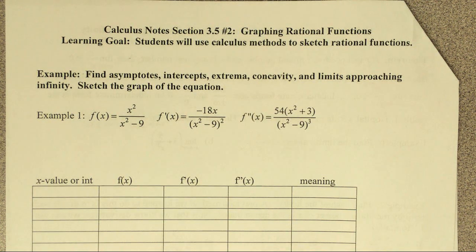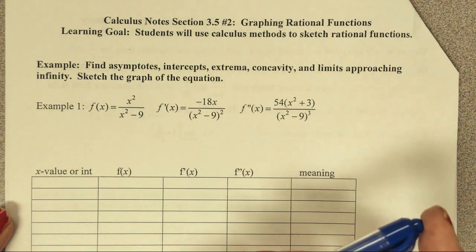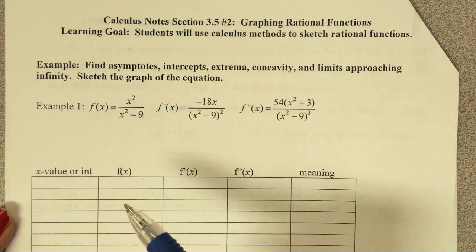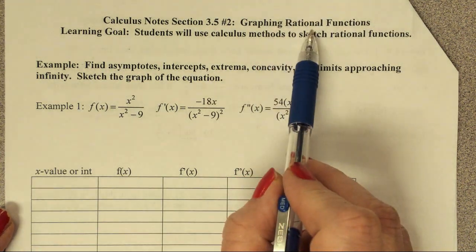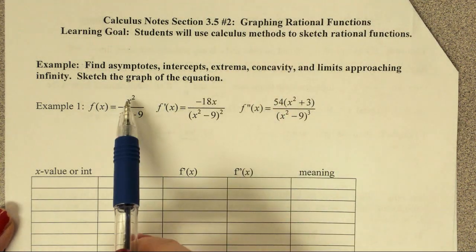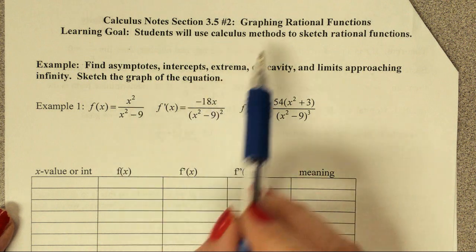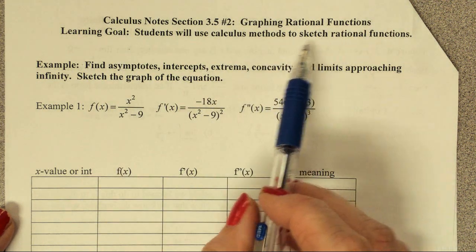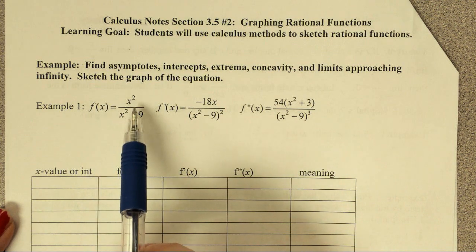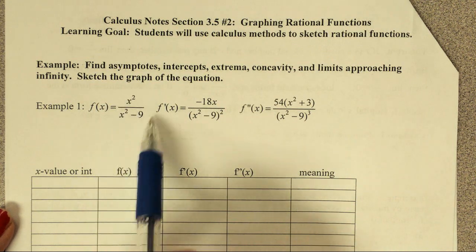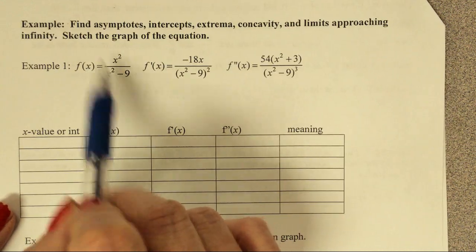We're looking at section 3.5, part two. Our goal is to be able to graph rational functions. Rational means fractional — when you see rational functions, that means you have a numerator and a denominator to your original function. If you see a polynomial function, that means there are no fractions; it's not going to have a numerator and a denominator.